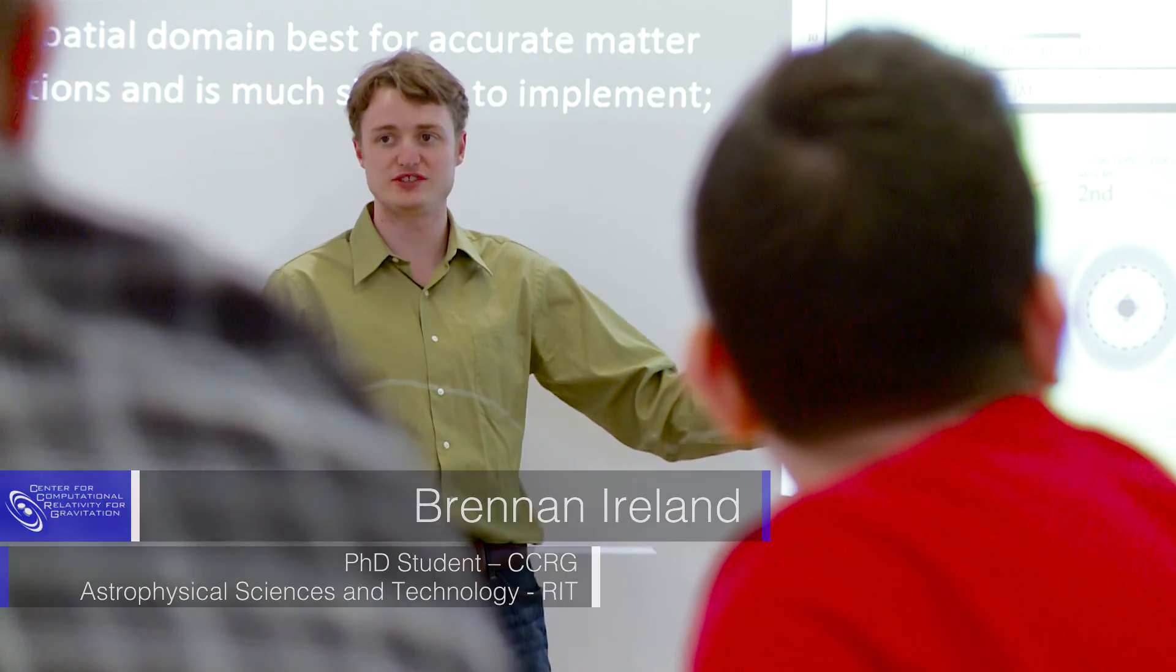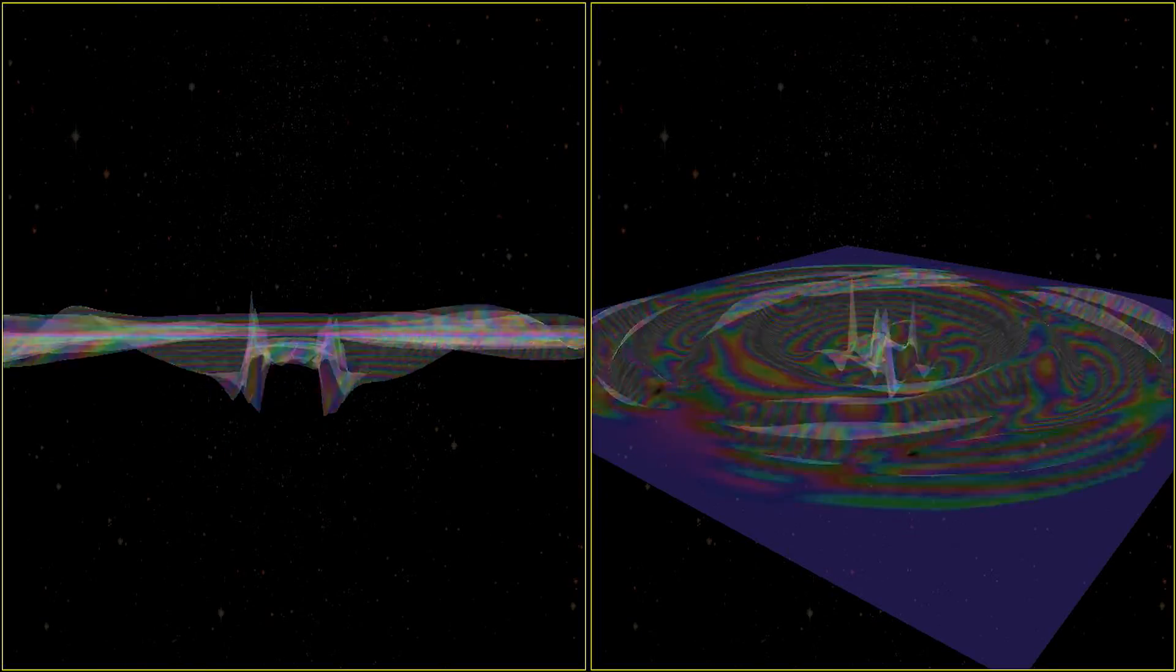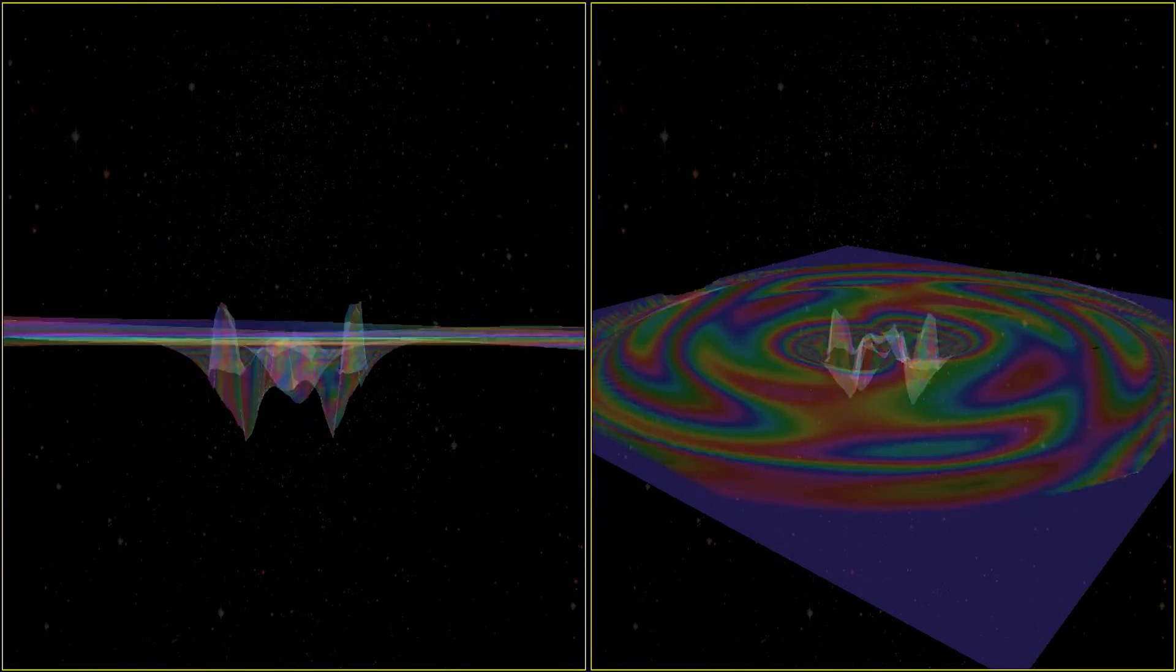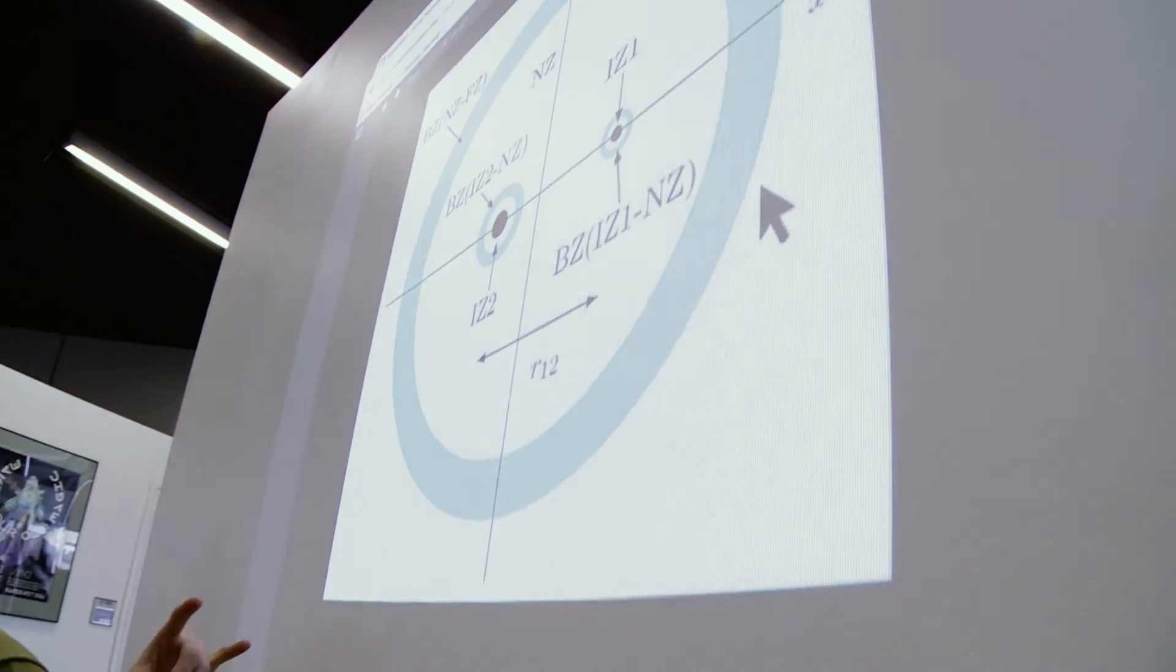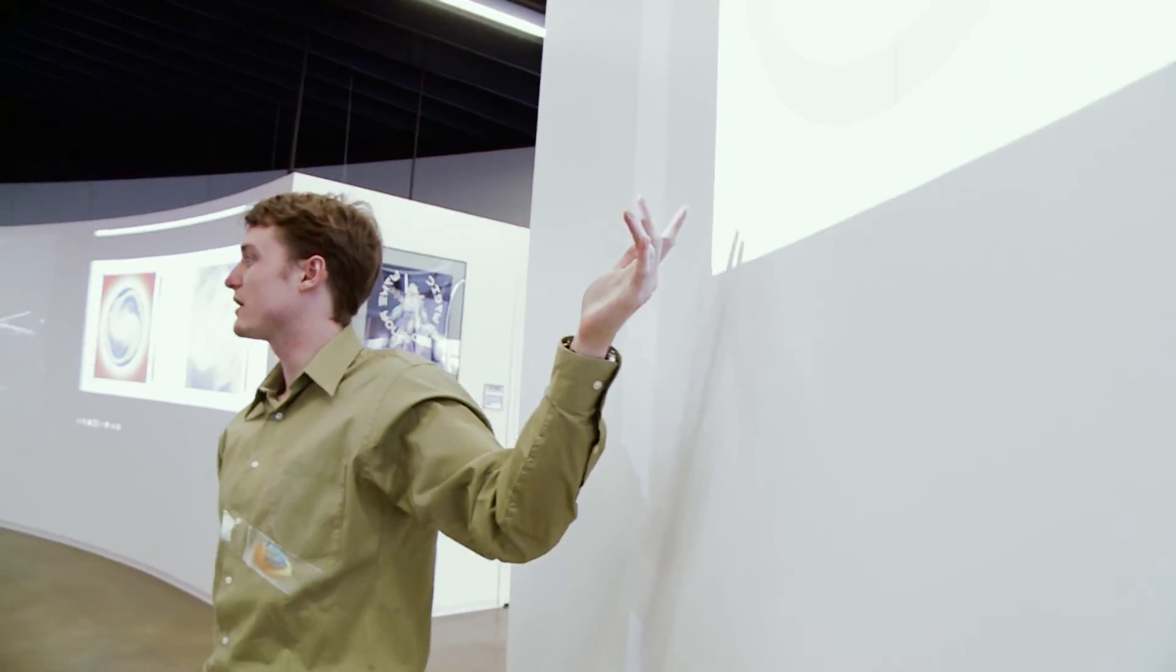Einstein predicted gravitational waves as a part of general relativity. And he said they were most likely real, and that we would most likely never see them because they were too small. And he is partly right and partly wrong.